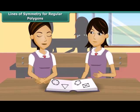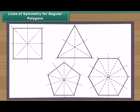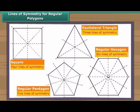Are the regular polygons symmetrical? Yes, regular polygons are symmetrical figures and have many lines of symmetry. Look at these figures: an equilateral triangle has three lines of symmetry, a square has four lines of symmetry, a regular pentagon has five lines of symmetry, and a regular hexagon has six lines of symmetry.